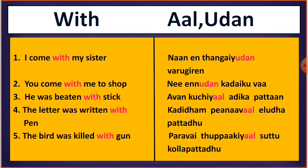For example: 'I come with my sister.' Here you are accompanying your sister. In Tamil you will say: 'Naan en thangai yudan verigireen.' 'Naan' means I, 'en' means my, 'thangai yudan' means with my sister, 'verigireen' means come. So instead of 'with' we are using 'udaan'.